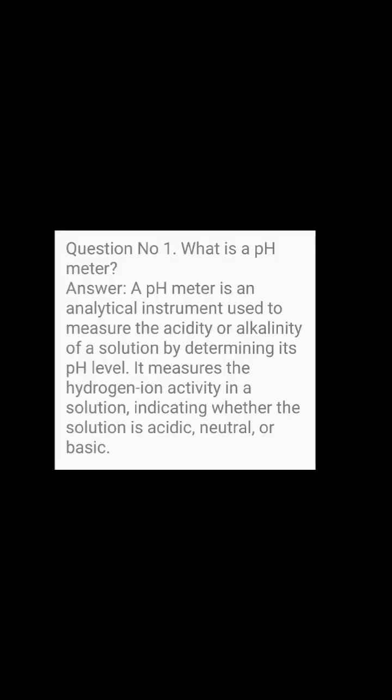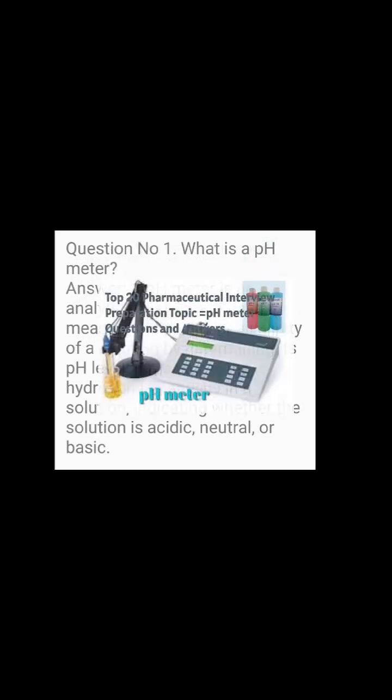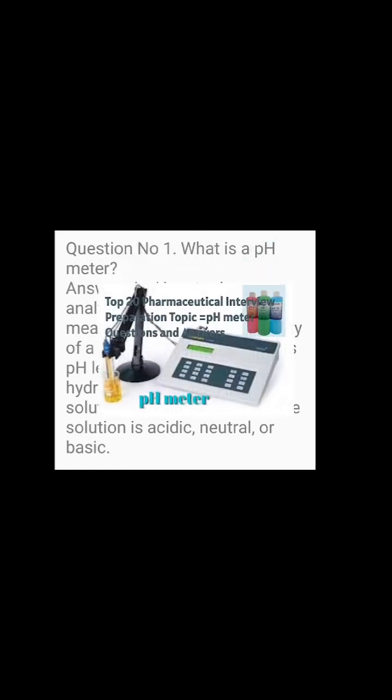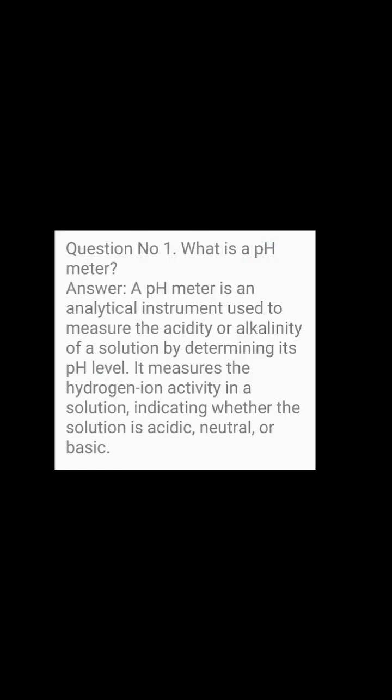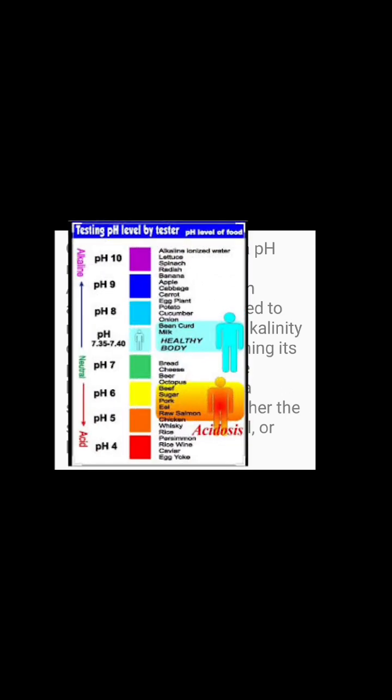Question number 1: What is a pH meter? Answer: A pH meter is an analytical instrument used to measure the acidity or alkalinity of a solution by determining its pH level. It measures the hydrogen ion activity in a solution, indicating whether the solution is acidic, neutral, or basic.